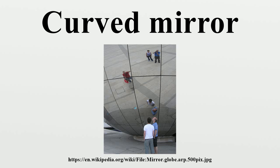As a result, images formed by these mirrors cannot be projected on a screen, since the image is inside the mirror. The image is smaller than the object, but gets larger as the object approaches the mirror. A collimated beam of light diverges after reflection from a convex mirror, since the normal to the surface differs with each spot on the mirror.